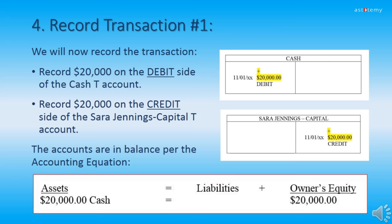Now we're ready for step four, where we actually record transaction one. First, we record the $20,000 on the debit side of the cash T-account, including the date and the amount — and for now we include the plus sign above and the word debit below. We then record the $20,000 on the credit side of the Sarah Jennings Capital T-account, with the date, the plus above, and the word credit below. As you can see on the slide, both accounts are in balance per the accounting equation: $20,000 in cash and $20,000 in owner's equity.